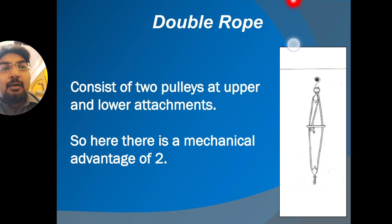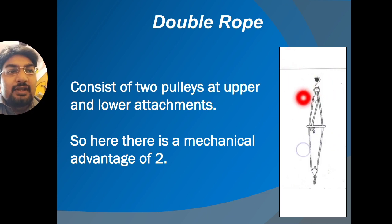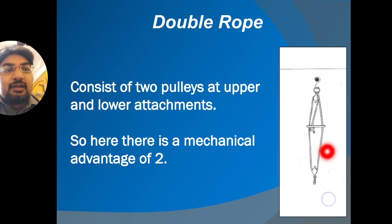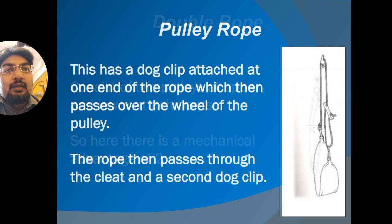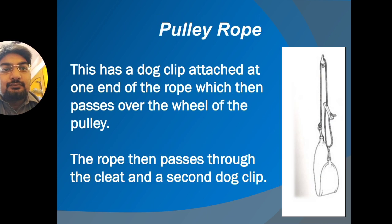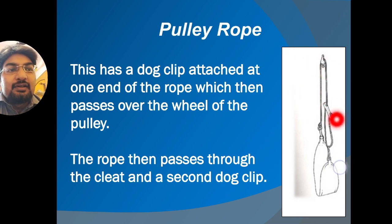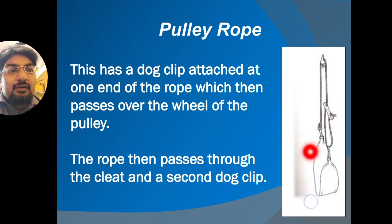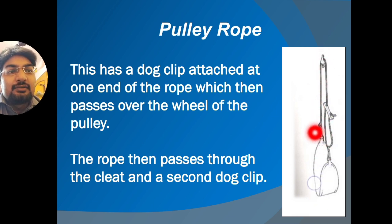The double rope consists of two pulleys at the upper and lower attachments, giving a mechanical advantage of lever two. The pulley rope has a dog clip attached at one end, which passes over the wheel of the pulley, attaches to the second ring of the sling, passes through the cleat, and connects to a second dog clip.